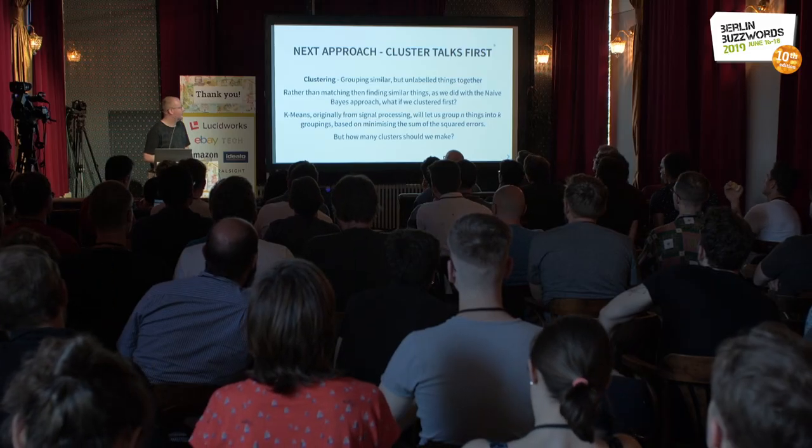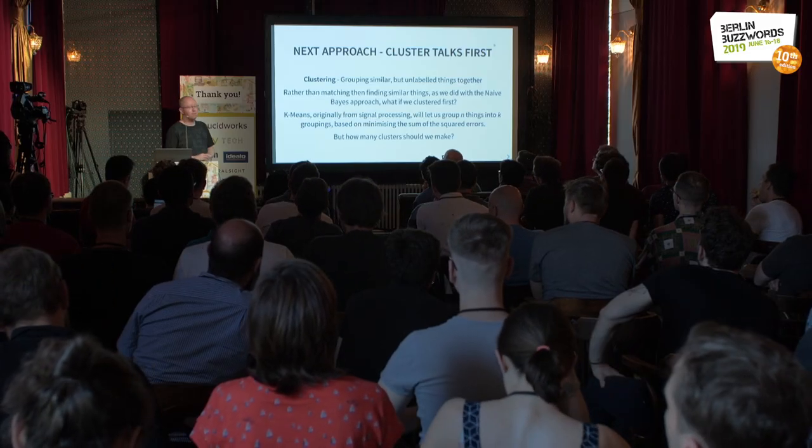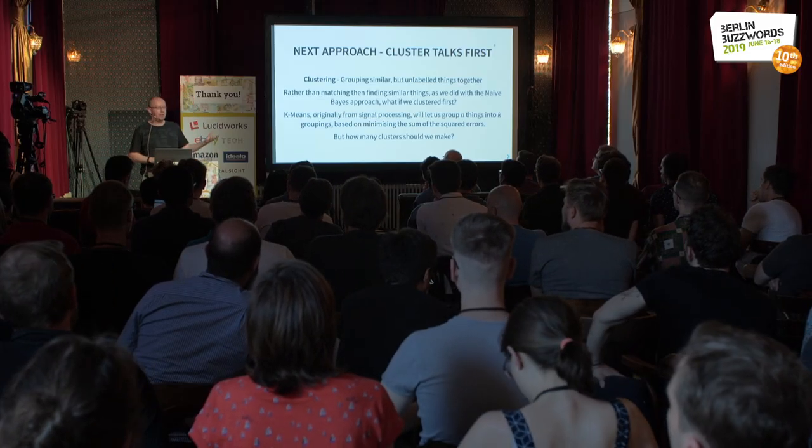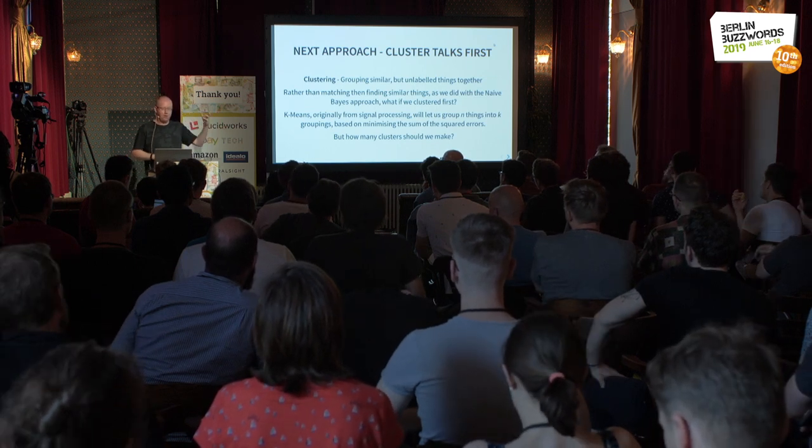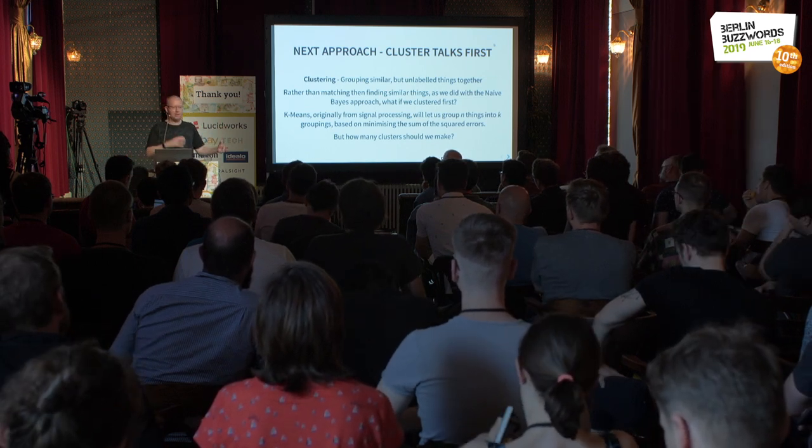The next thing we can try is clustering — where we want the machine learning system to figure out what is similar to other things without the help of a label. If we've got the label, that's classification — that's dog, that's a hot dog, easy. Clustering is where we don't quite know up front what the right answer should be.